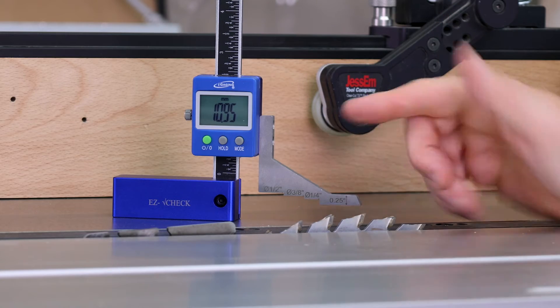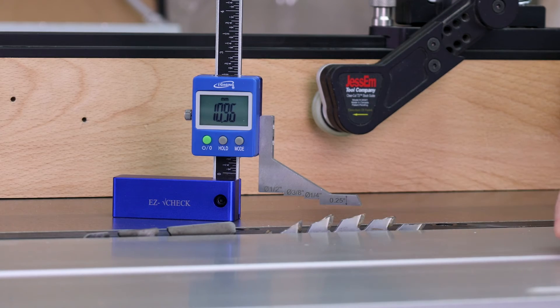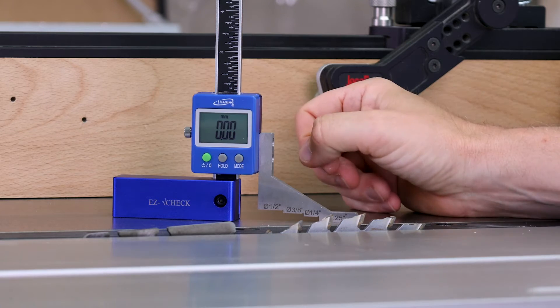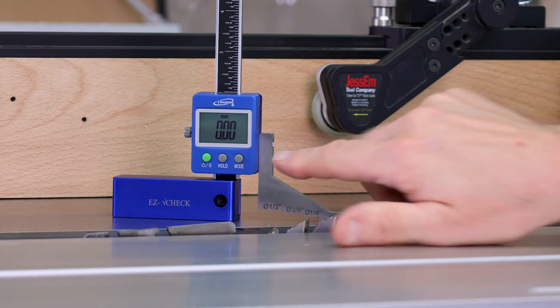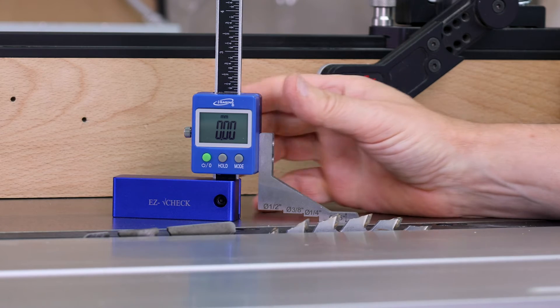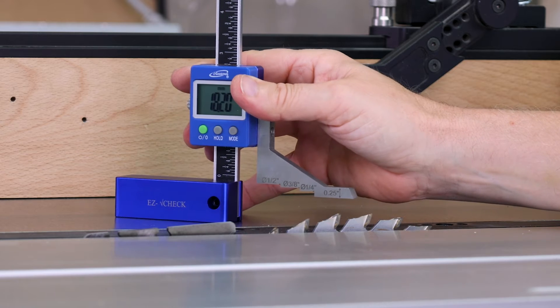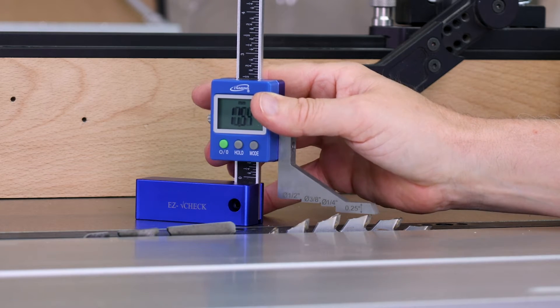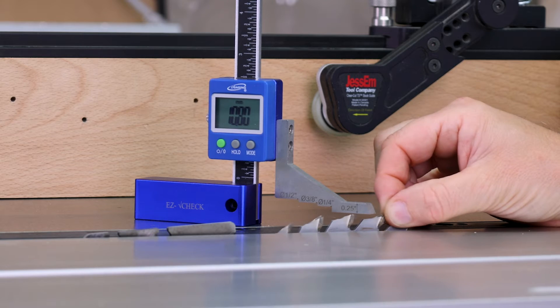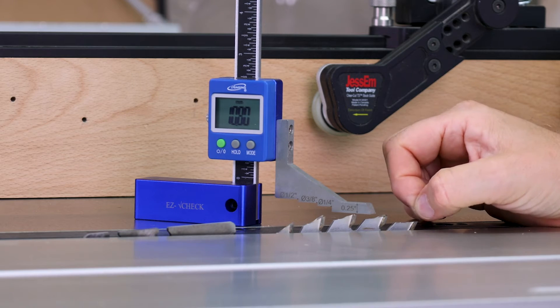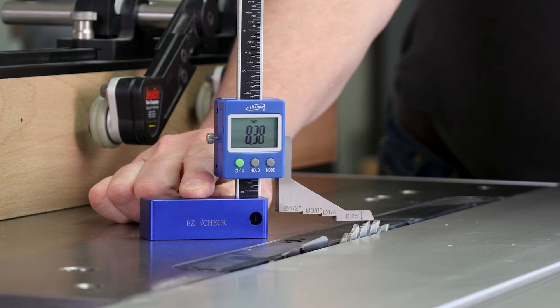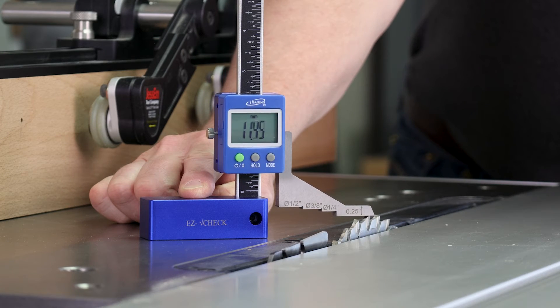If you want to use the EZ-Check to set a saw blade to a particular height, bring your EZ-Check over, put it against your bed and make sure it's on zero. Press the mode if you want to change it to inches or fractions, bring it over so it's on top of the saw blade and just wiggle the saw blade to make sure you're at the top of the arc. I'd just put my finger on there to hold it down as you make that fine adjustment up to your finished height.